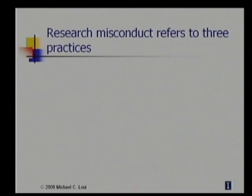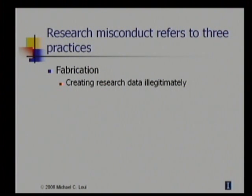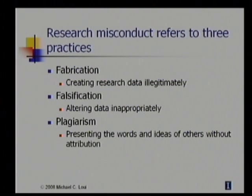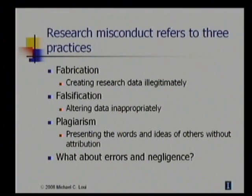When we think about ethics in research, we think of research misconduct — things that go badly wrong. Bad practices such as fabrication, or creating research data illegitimately; falsification, which is altering that data in inappropriate ways such as throwing out outliers without good reason or massaging the data so that it fits our theory or preconceived notion of what might happen; and finally, plagiarism, which is presenting the words and ideas of others without proper attribution. We know plagiarism is wrong because it's misrepresentation of the ideas of others and also theft of other people's work.